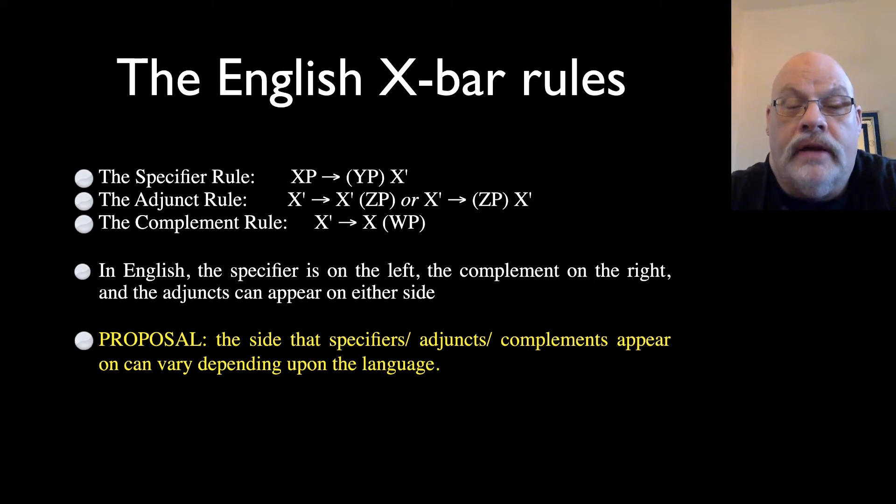So our proposal is that, in fact, we have parameters across these rules. And all of the rules are going to look a little bit like the adjunct rule with an or statement in them.